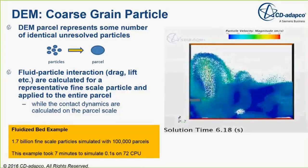Here is a typical example of a fluidized bed where 1.7 billion fine-scale particles have been simulated with only 100,000 coarse-grained particles. This significantly reduces computation time — it takes 7 minutes to simulate 0.1 seconds on 72 CPUs.